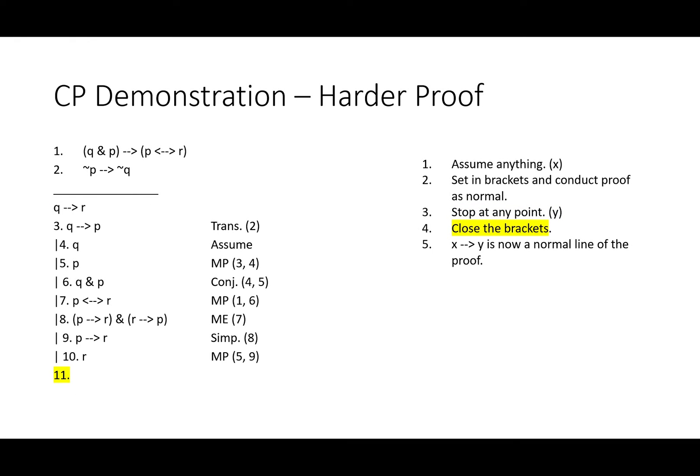So we close our brackets. This would be a line that we can cite anywhere and that is eligible to end the proof. If Q then R is now a normal line of the proof. We cite lines four through ten, all of them, with a dash to show that all of those lines together add up to one long conditional proof, showing that Q entails R. And that is the end of this demonstration.